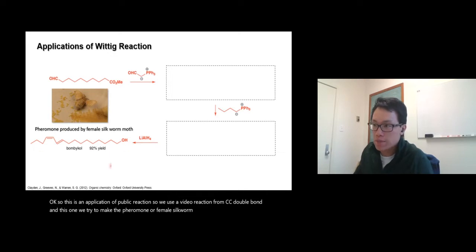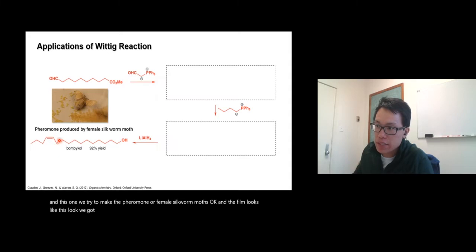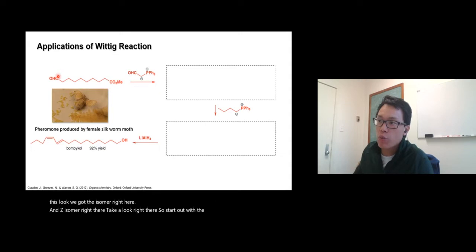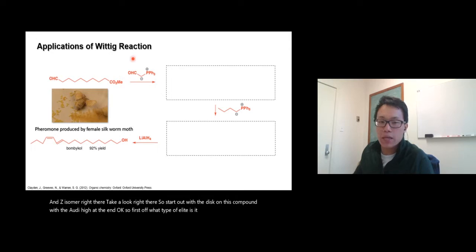The pheromone looks like this. Take a look, we got E isomer right here and Z isomer right there. Take a look right there. So start out with this compound, this compound with the aldehyde at the end.